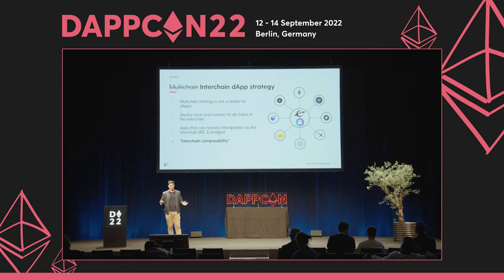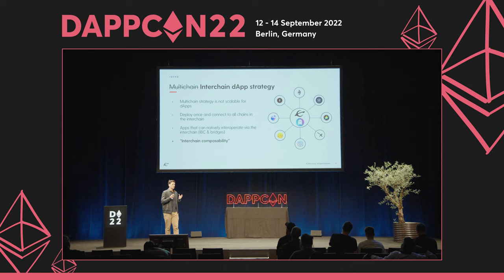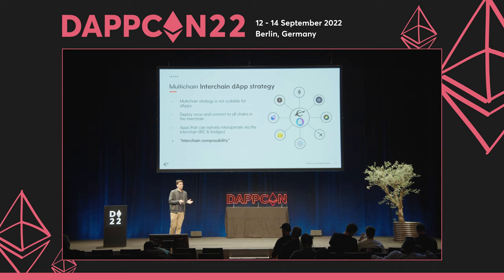If they deploy on Evmos, they will be able to interoperate natively with the Cosmos and interchain ecosystem, and also with the EVM ecosystem. This is what we call interchain composability — the functionality for these applications to grow in terms of scale and allowing other chains to interact with these decentralized applications, even if those other chains are not EVM-compatible.